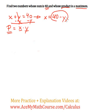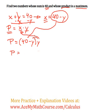I'm going to take the 40 minus y which is x and plug it in right here for x. So I get P is equal to 40 minus y times y. Now I can distribute the y. So 40 times y, 40y, negative y times y, negative y squared.